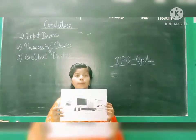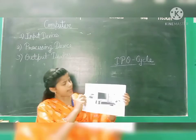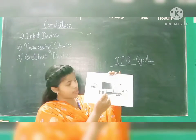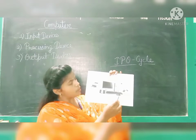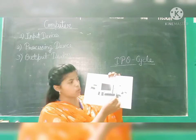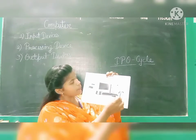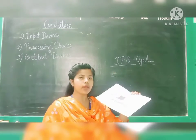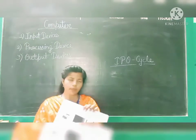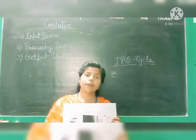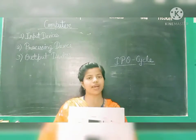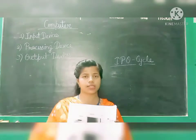This is the whole computer system. You can see the monitor, keyboard, mouse, speaker, printer, CPU, and microphone. In the computer system, there are four types of devices. The computer system devices are divided into four parts.